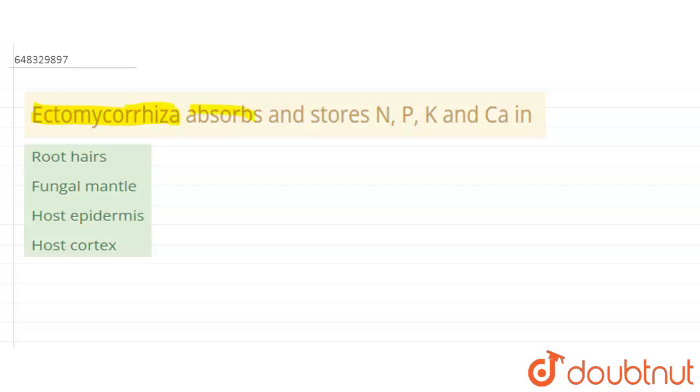Ectomycorrhiza absorbs and stores nitrogen, phosphorus, potassium, and calcium. N is for nitrogen, P is for phosphorus, K is for potassium, and lastly, Ca is for calcium. So these are the minerals.